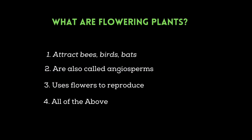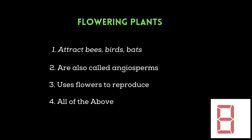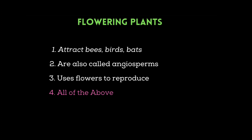What are flowering plants? They attract bees, birds, and bats and are also called angiosperms. They use flowers to reproduce. All of the above. Your time starts now. The correct answer for this question is number four: all of the above.